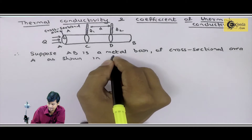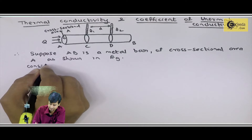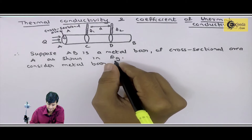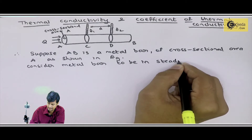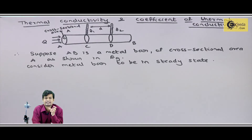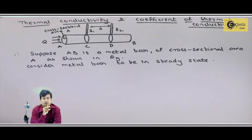As shown in the figure, consider the metal bar to be in steady state. This means the metal bar in steady state condition will not produce further heat beyond that point. So we need to find out the temperature at thermometer 1 and thermometer 2 — which part of the rod is hotter and which is cooler.